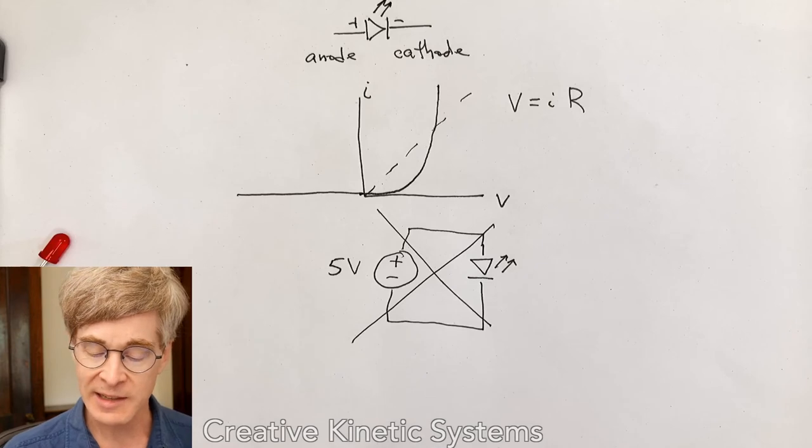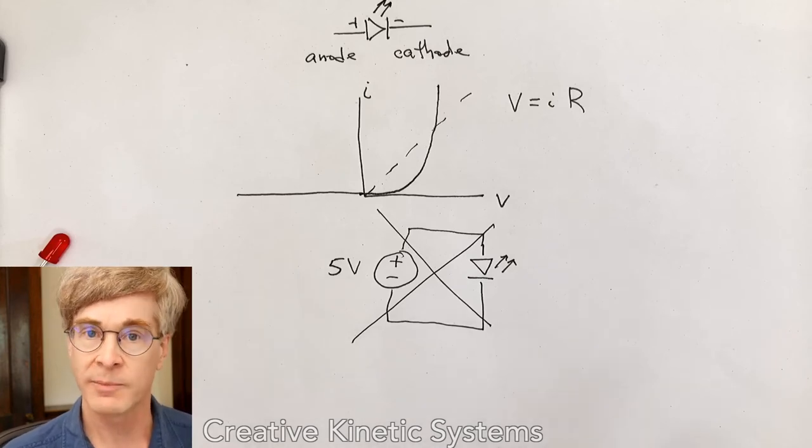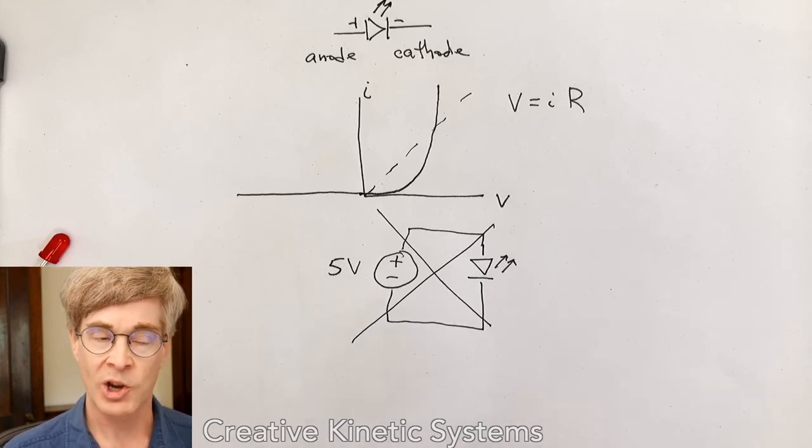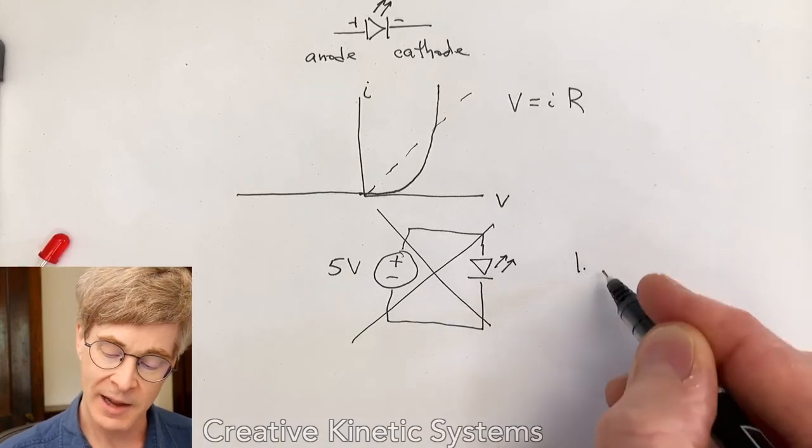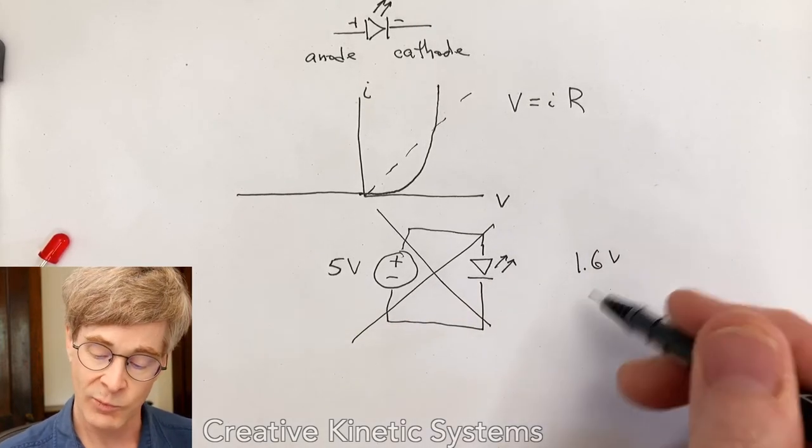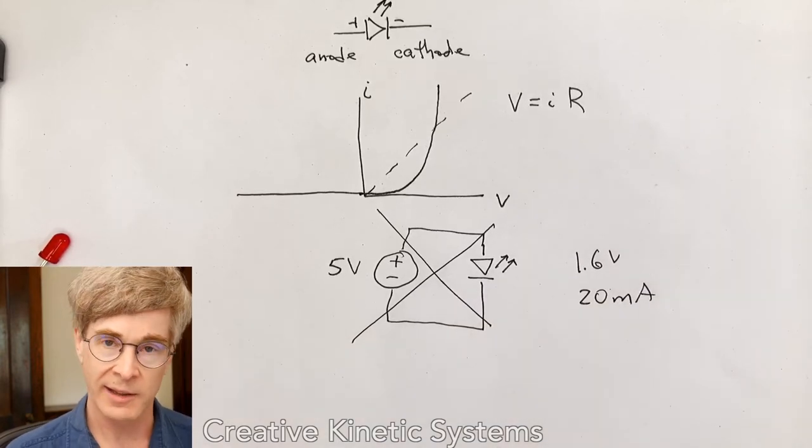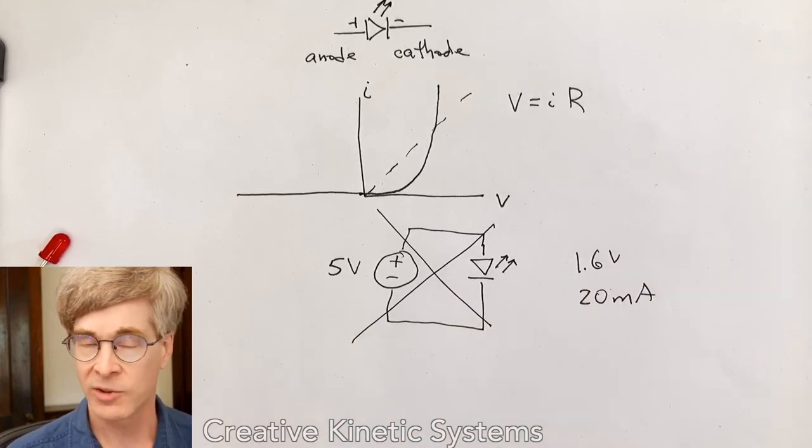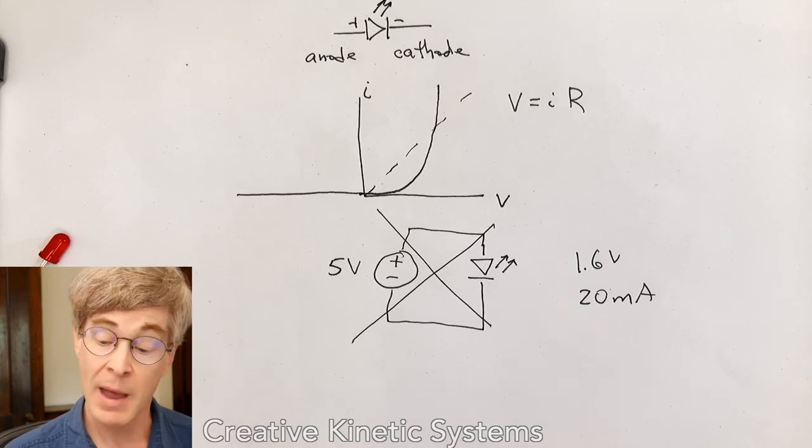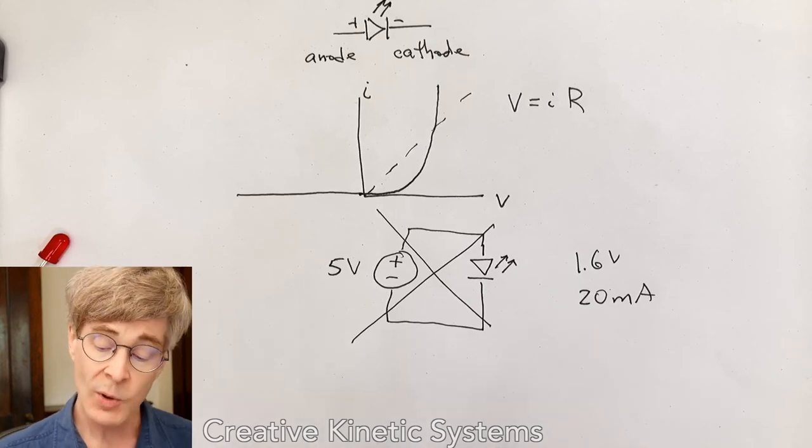For our LEDs, I think sticking around that 1.6 volt value with a current no more than 20 milliamps is a desirable point that'll get reliable operation. 20 milliamps is like a typical working limit. And if you go higher than that, the lifespan is reduced. If you go much higher than that, it melts.